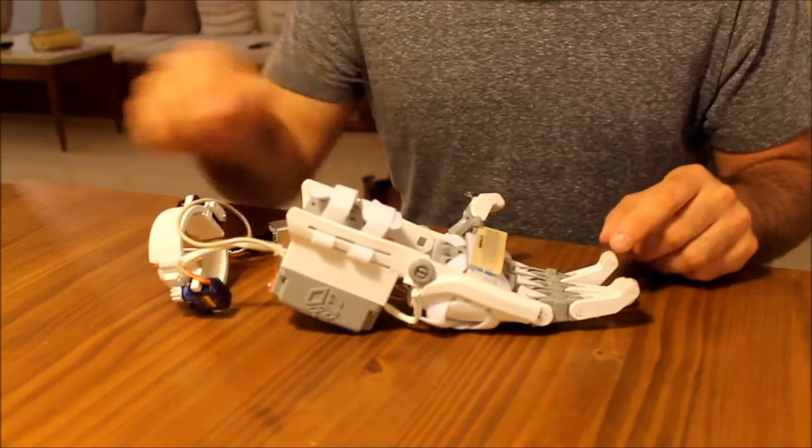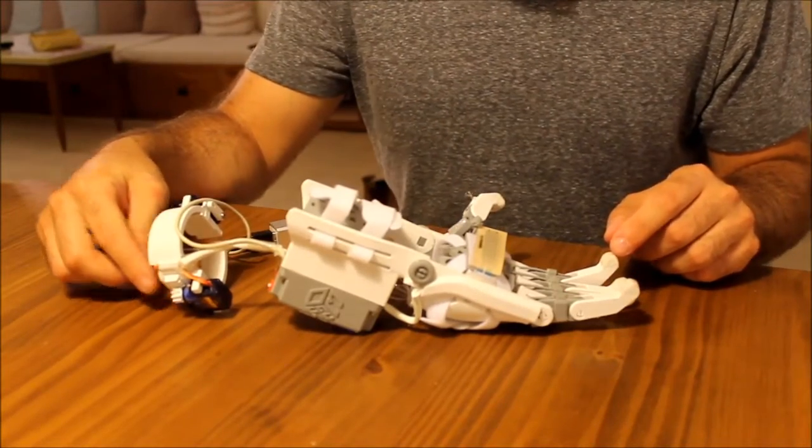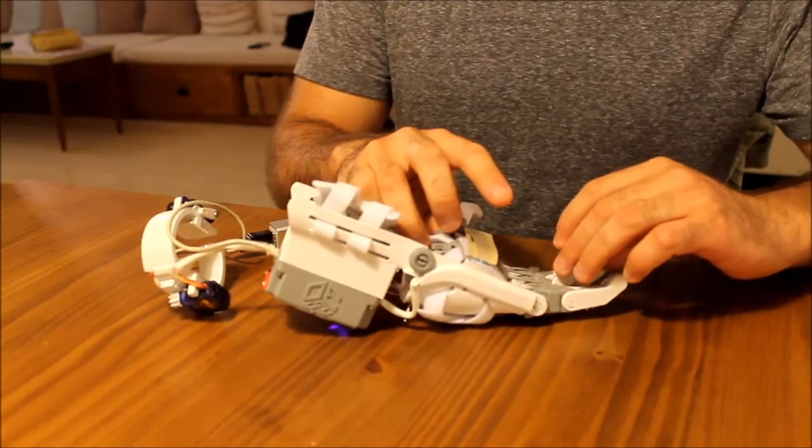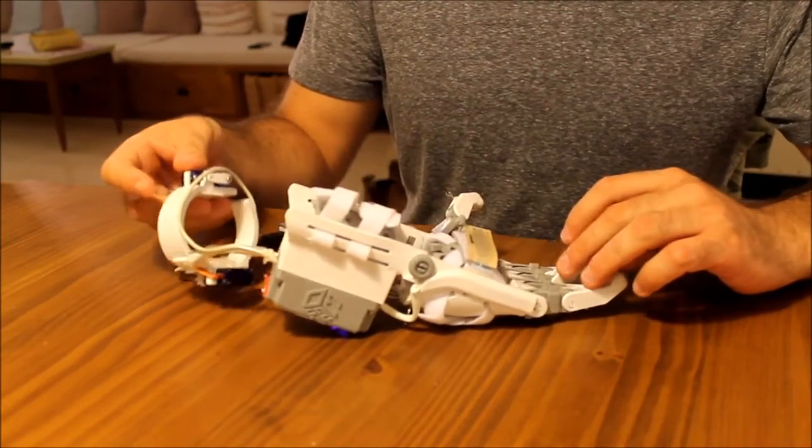So the index and the thumb are both connected to this servo, and the other three fingers are connected to the other one. You see that the crank is moving.